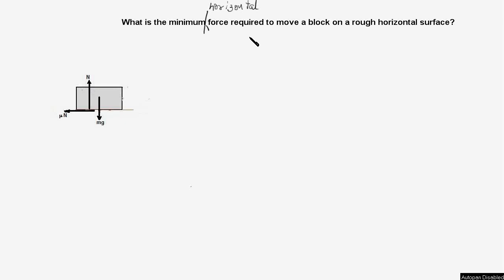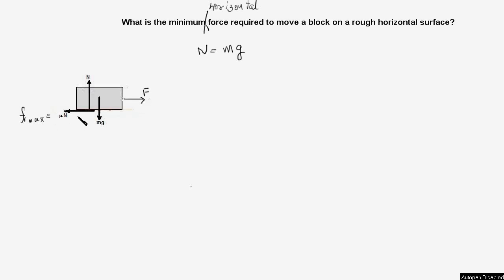Then the solution would have been quite easy. A horizontal force F is applied on the block to make it move to the right. For equilibrium in the vertical direction, the normal force N equals mg. When the block is about to move to the right, the friction force reaches its maximum value equal to mu times N. Therefore F equals mu times N, that is mu mg. So the minimum force required to move the block is mu times mg.